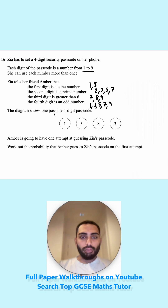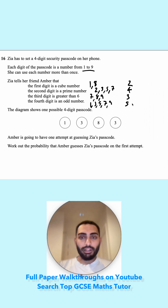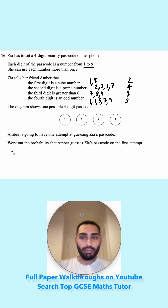The diagram shows one possible four-digit passcode. Amber is going to have one attempt at guessing Zia's passcode. Work out the probability that Amber guesses Zia's passcode on the first attempt. So let's think, how many options do we have altogether? For the first number, we have two options. For the second, we have 4. Third digit, we have 3, and then we have 5 options for the last one. If we multiply all of these, that will tell us how many possible combinations there are.